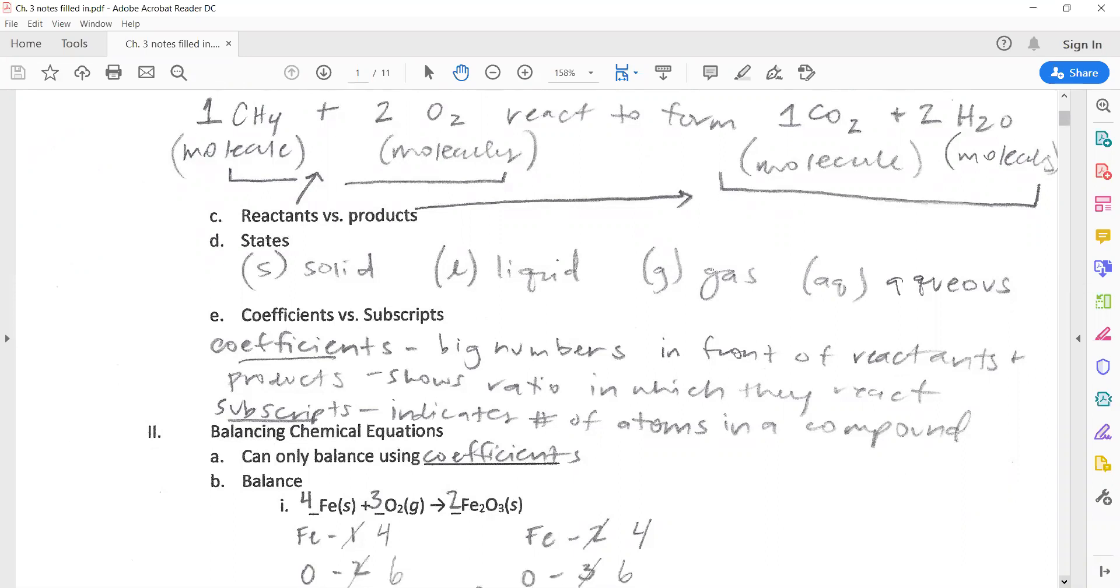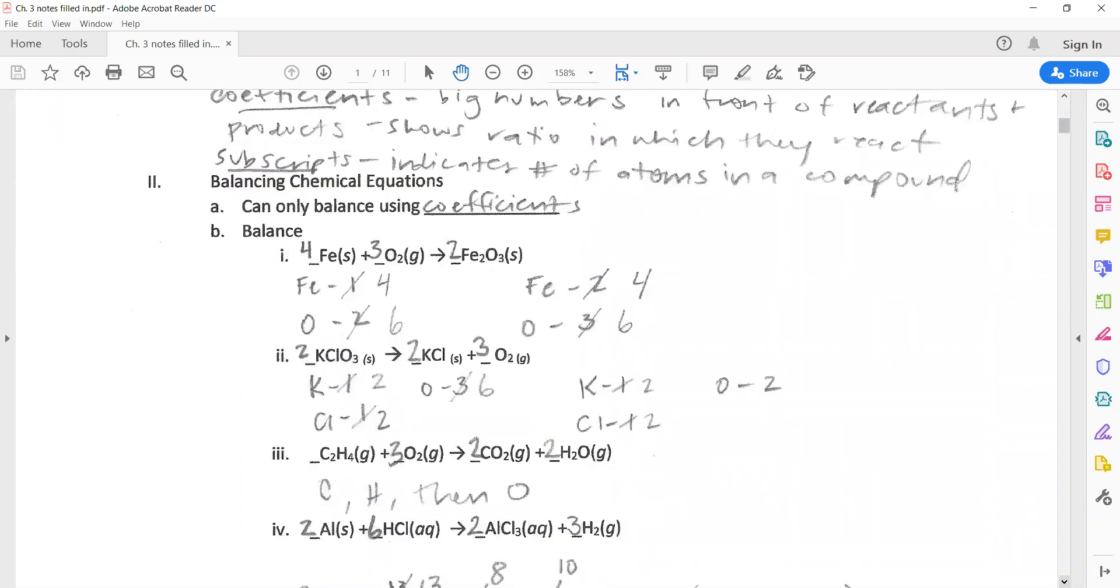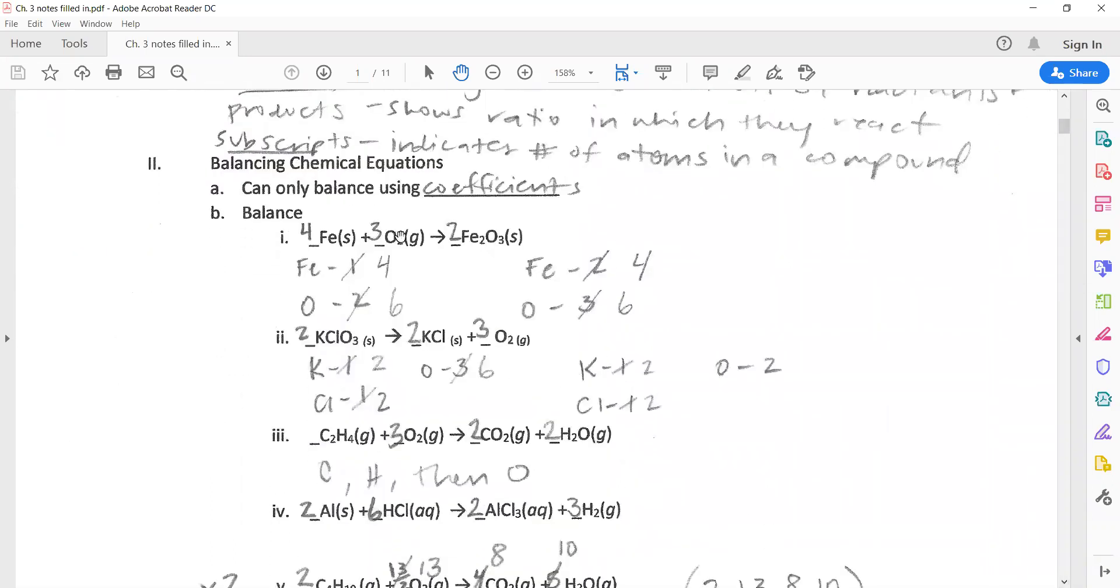Whenever we are balancing a chemical equation, what we're trying to do is get an equation to agree where the same number of atoms on the left side are also found on the right side. So whenever you're balancing chemical equations, you cannot change the subscripts, the little numbers, because the little numbers tell you who that compound is. What you can do is add coefficients, these big numbers, because all they are doing is giving us a ratio.